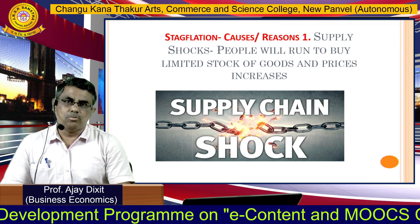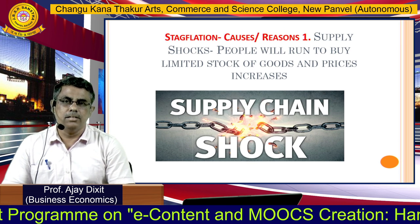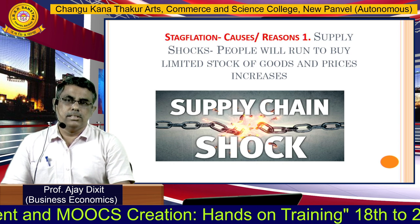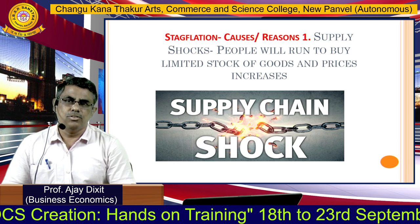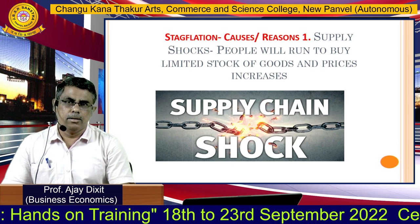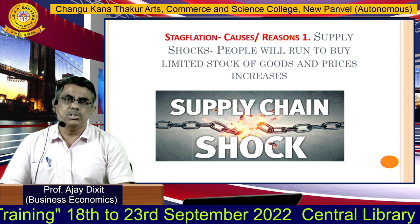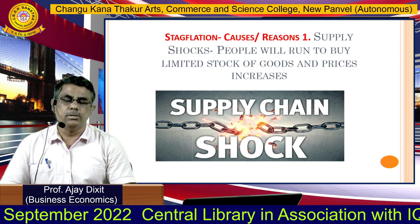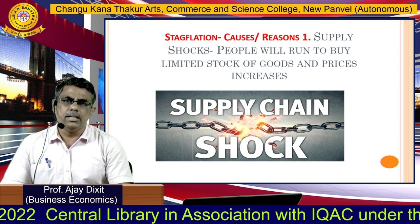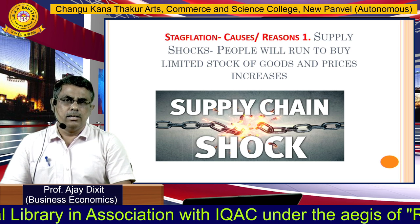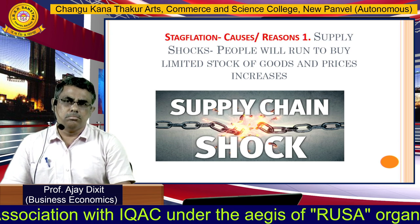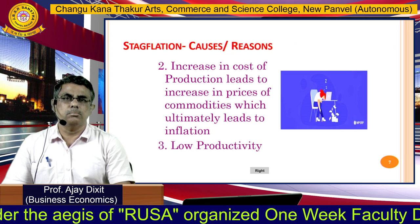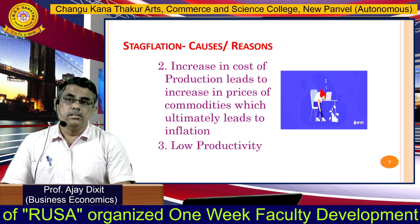Now we come to the causes. Why does the situation of stagflation arise? Why is there inflation and stagnant growth? There are a number of causes. The first cause is supply shocks — people rush to buy a limited stock of goods, and prices increase due to supply chain disruptions. After COVID-19 we experienced supply chain breakups, creating a deficit in supply while demand remains the same.